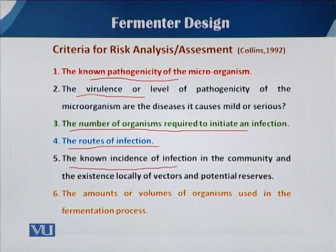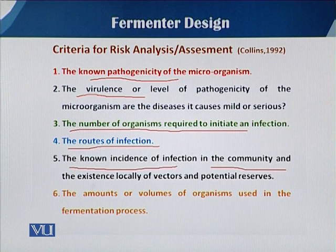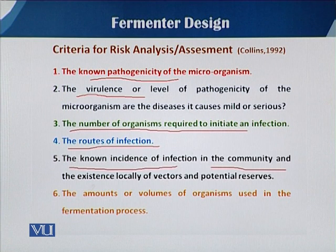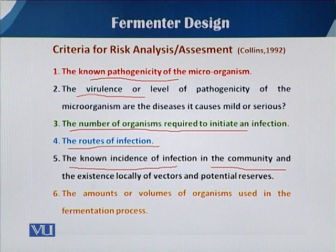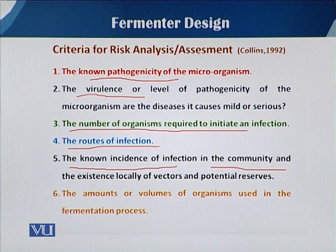The fifth criterion is the known incidence of that infection in the community where the fermentation process is to be run — whether any cases of such disease have already been reported there. For example, in Pakistan, going back 10 years there were no reported cases of dengue, and that was the first occurrence of the dengue problem in the Pakistani community. If we are using such pathogens in our fermentation process, we should know whether the disease caused by that organism has already been reported in our society or not.